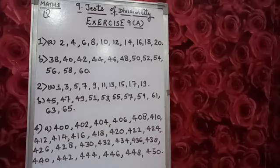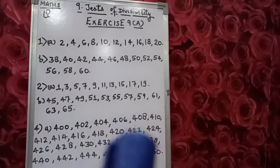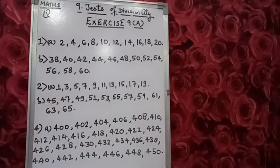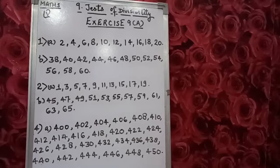Question B: we have to write odd numbers lying between 45 to 65. They are: 45, 47, 49, 51, 53, 55, 57, 59, 61, 63, and 65. I hope question 1 and question 2 are clear. In question 1 we wrote all the even numbers, and in question 2 we wrote all the odd numbers lying between the given ranges.